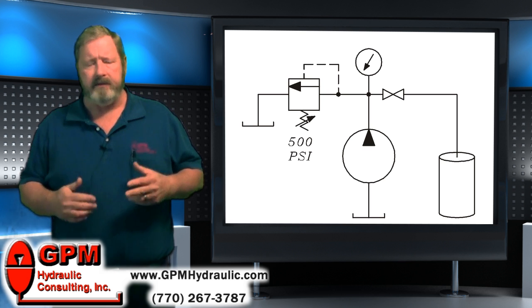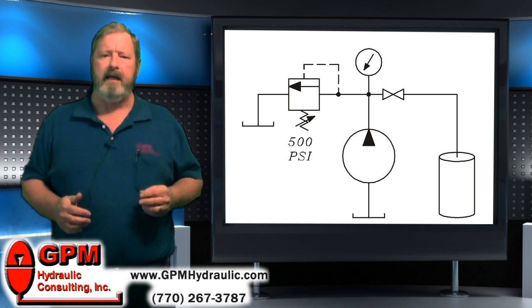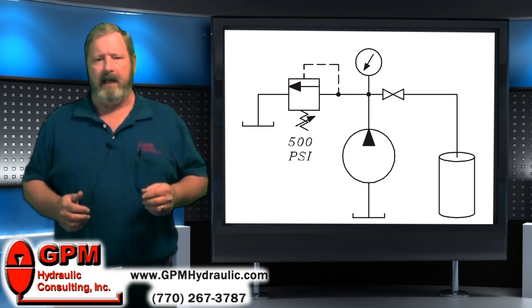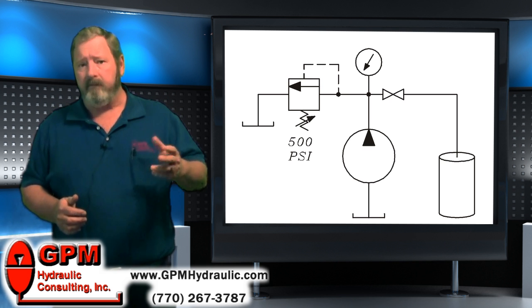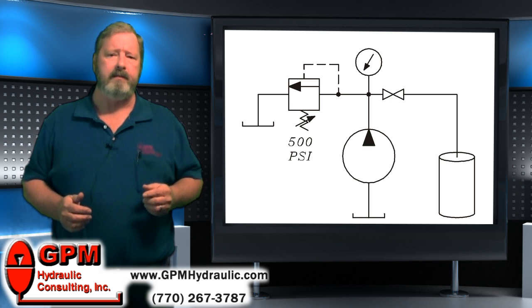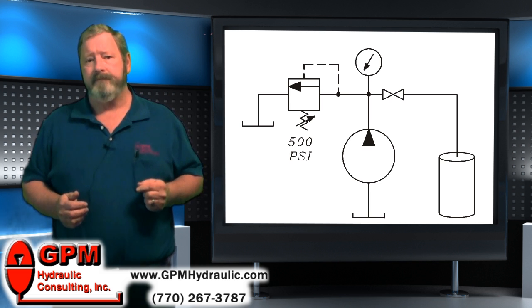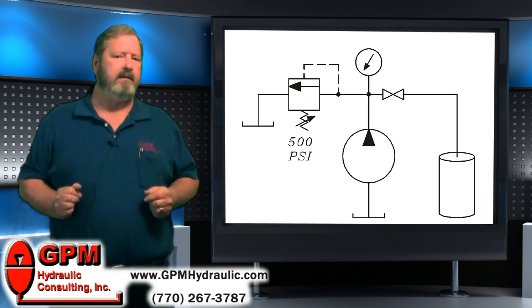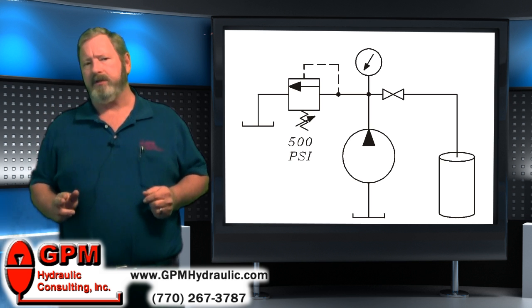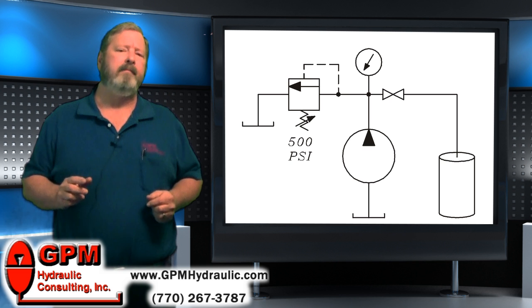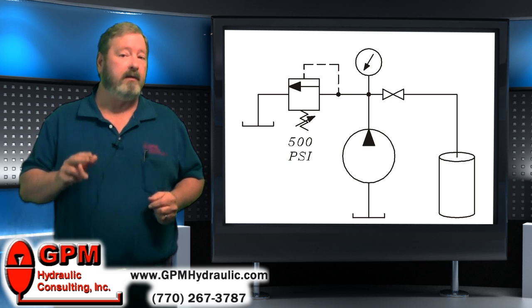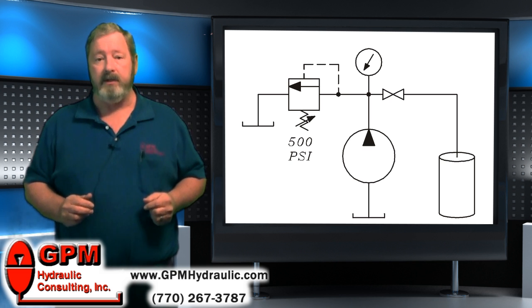The pump doesn't pump pressure, it delivers a rate of flow. That flow meets with, and hopefully overcomes, a resistance, and the result of this is pressure. So what you're reading on a gauge is not how much pressure the pump is putting out. What you're reading is the amount of resistance currently being overcome in the machine.